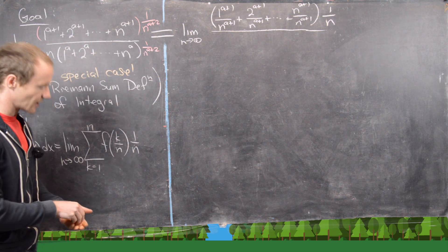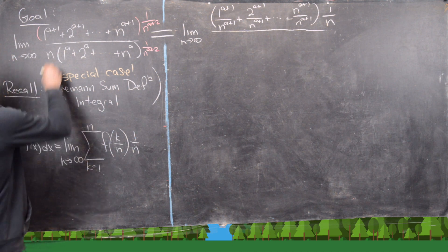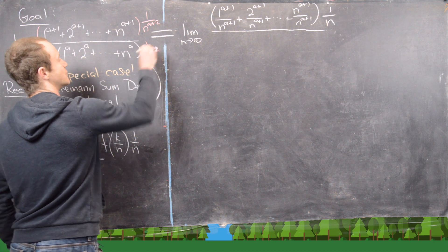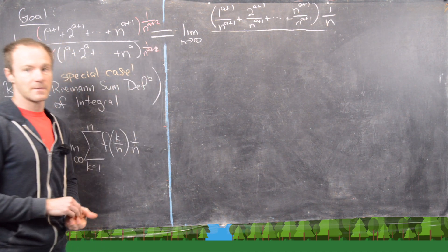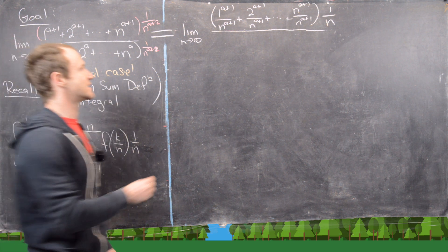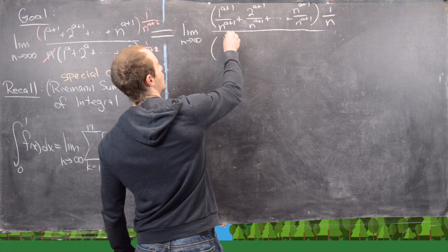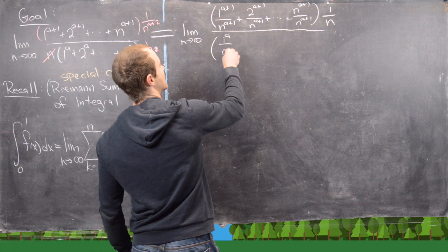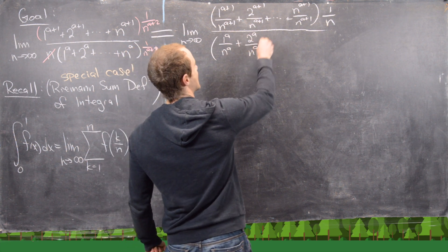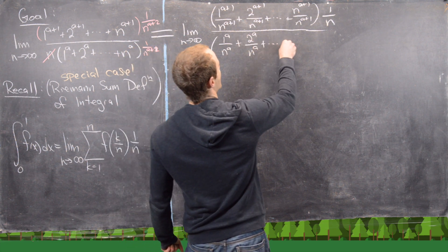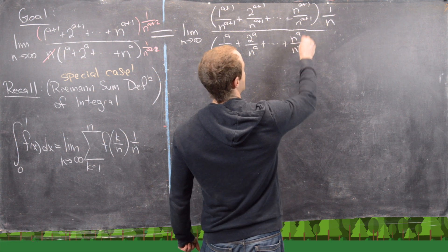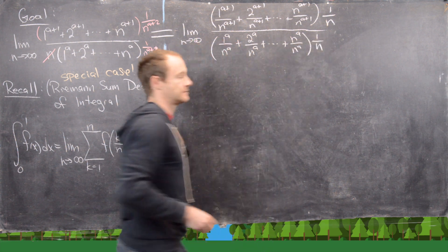I'll do something pretty similar in the denominator. I'll hold 1 out and distribute the rest through, giving me (1^a)/n^a + (2^a)/n^a, all the way up to n^a/n^a, and then 1/n.